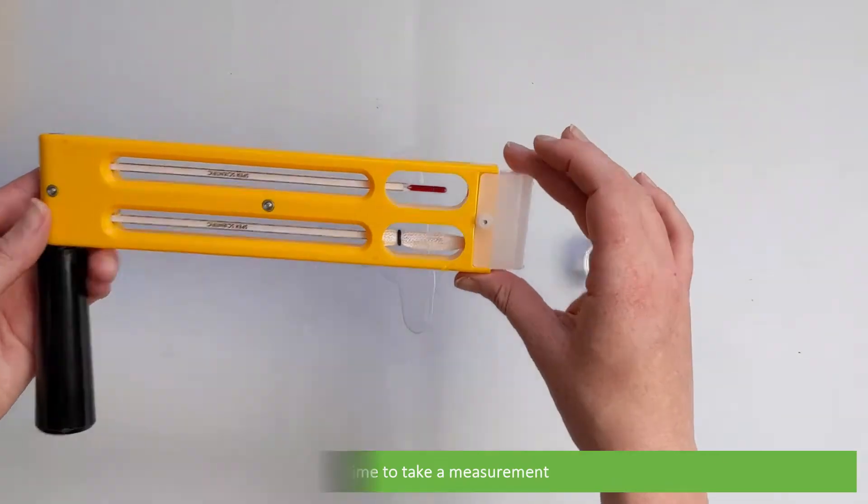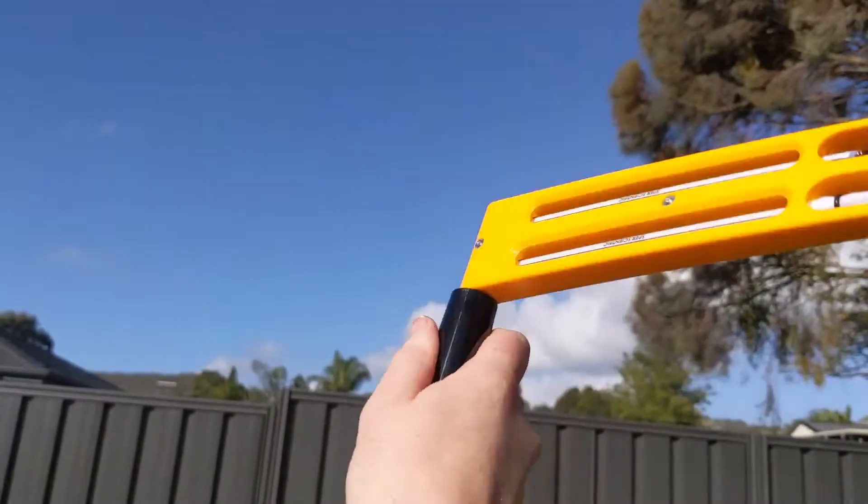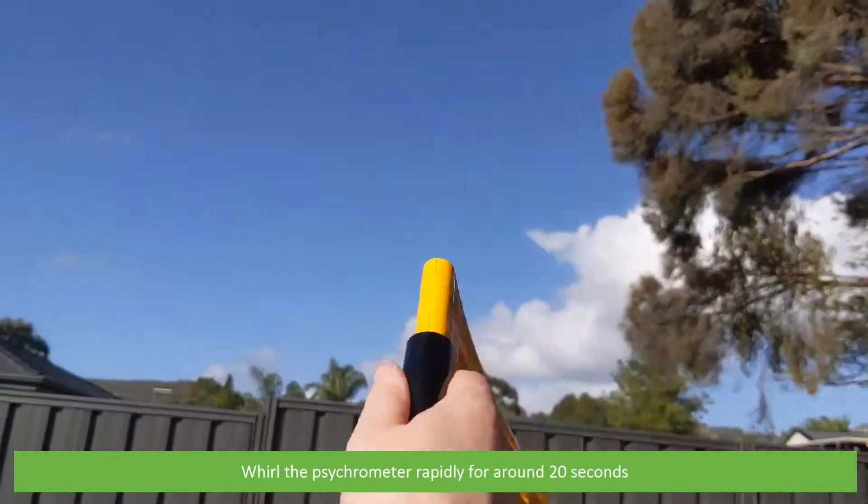It's time to take a measurement. Whirl the psychrometer rapidly for around 20 seconds.